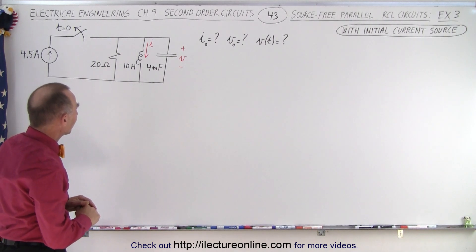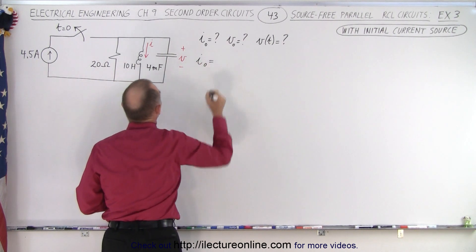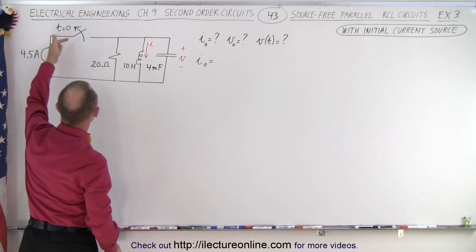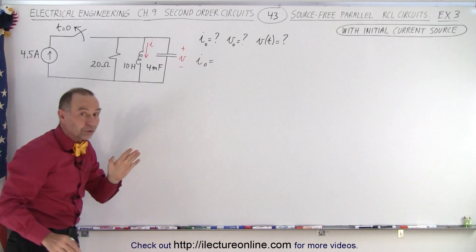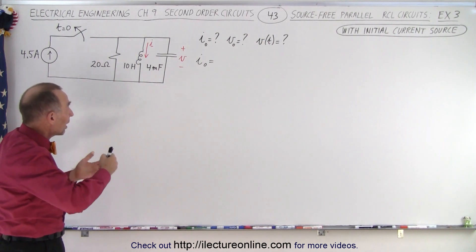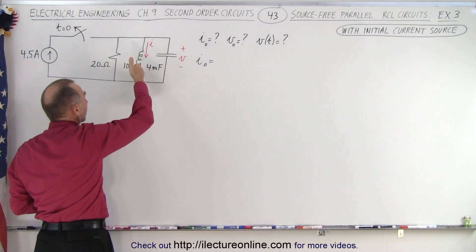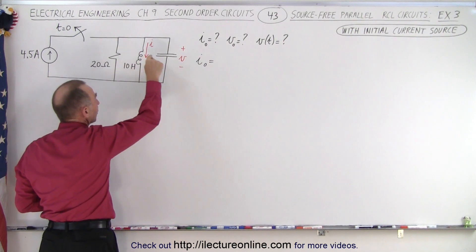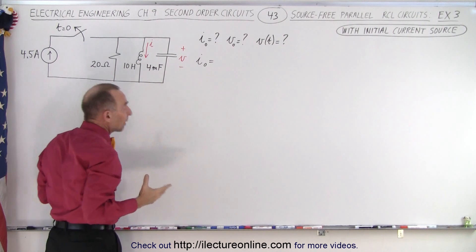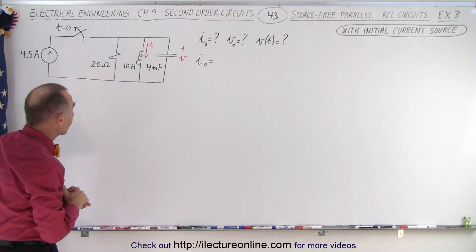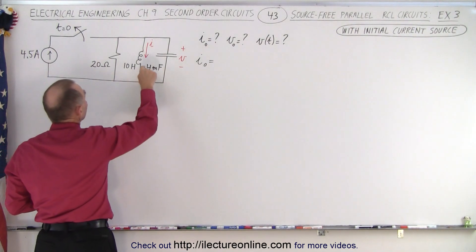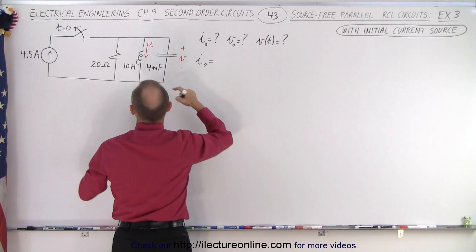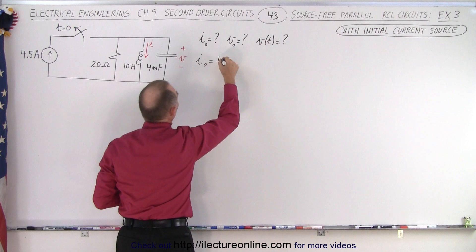Let's find the initial current. I-initial: when the switch is closed, the current source drives current through the circuit. The inductor acts like a short circuit at steady state — all the current goes through the inductor, because the inductor only opposes a change in current, the resistor opposes current via Ohm's law, and the capacitor once charged allows no current to flow. So all current goes through the inductor, and the initial current is 4.5 amps.